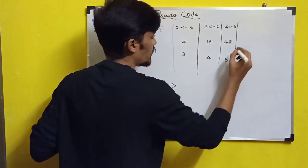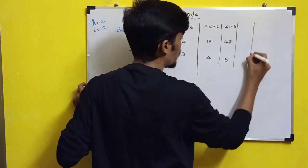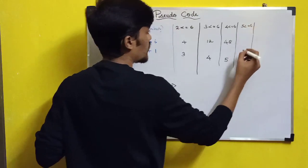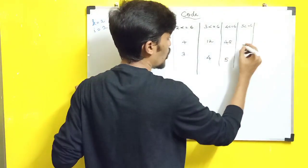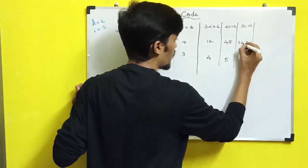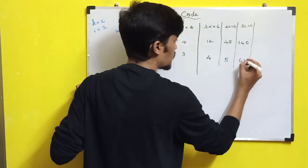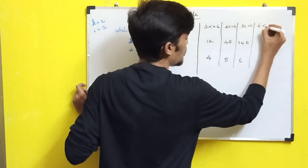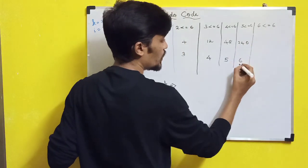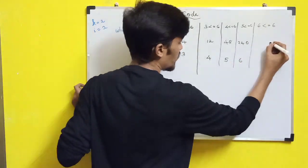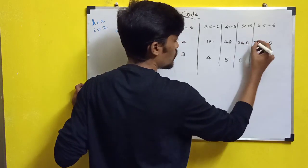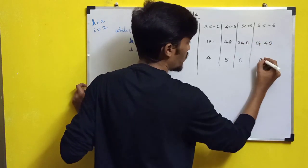48 into 5 — I increments. 5 is less than or equal to 6, condition is satisfied. So 48 into 5 is 240. Then 240 with I equal to 6 — 6 is less than or equal to 6, condition is satisfied. So 240 into 6 is 1440.